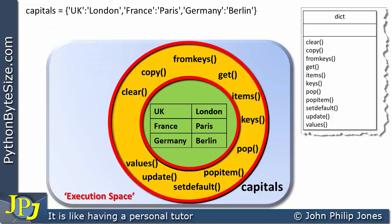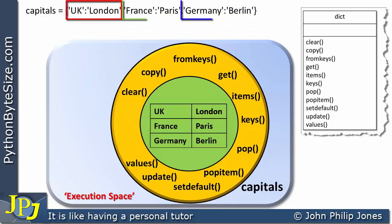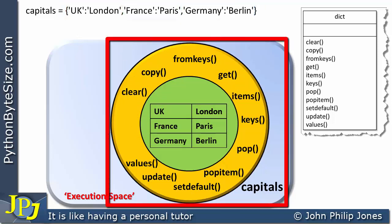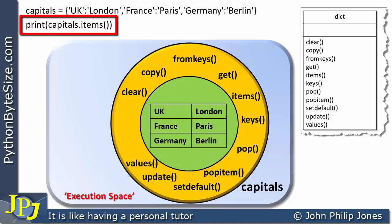In this region, you can see we have all of the methods that were defined in the dictionary class. And at the center, you can see we have all of the items — there are three items — which have clearly been taken from the three key-value pairs here. We now have the object created and existing in the execution space, and what I wish to do now is to send a message to it to invoke the items method. Here you can see I have the appropriate program statement.